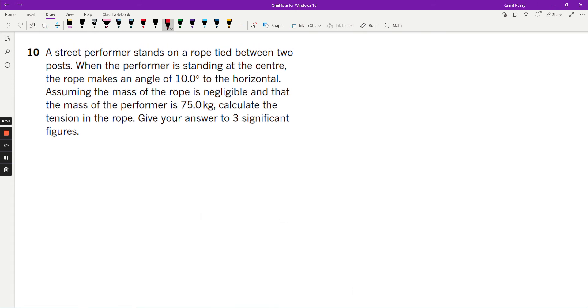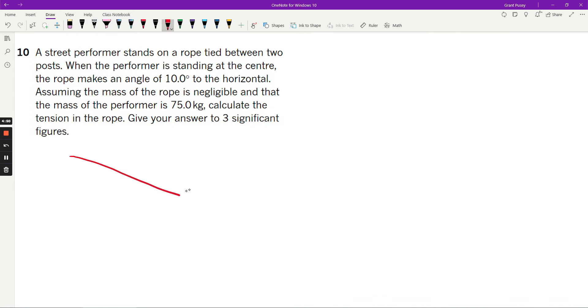So in this particular scenario, what you've got is a tightrope that's being pulled down because this guy's standing on it. He's going to be exerting a weight force, and then that's going to be in equilibrium because of two tensional forces like this.